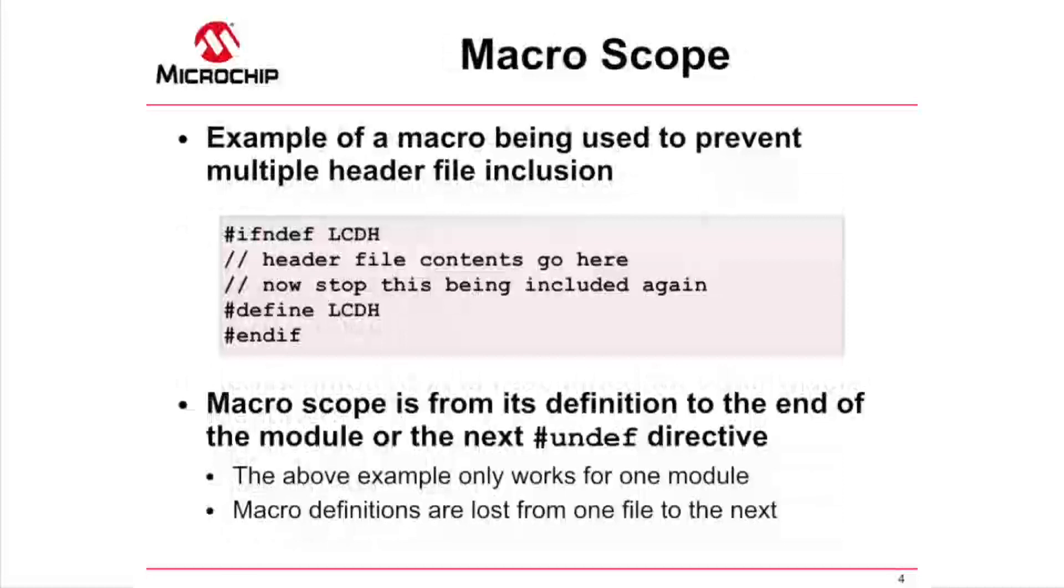A common use for a plain macro is to prevent the contents of header files being compiled more than once, as shown in the header file stub in the example box. Only if a particular macro symbol, LCDH in this example, has not already been defined, will the contents of the header file be included. The header file contents are enclosed in the #ifndef and #endif directives. The macro symbol which controls this inclusion is defined along with the header file contents, thus preventing further inclusion of the same code. The macro LCDH has no replacement text in this example, but is still considered as being defined by the preprocessor. Most compiler-supplied header files use such a mechanism, and this is useful for your header files as well.